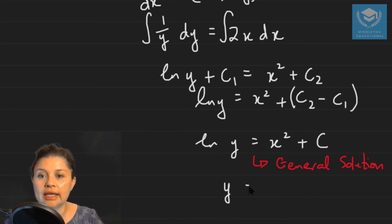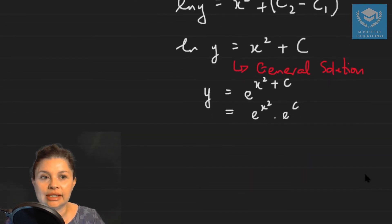So we say y is equal to e to the power x squared plus c. That is the same as e to x squared times e to the c. And that e to the c, that is just a constant also. So you can write this as a constant k times e to x squared.